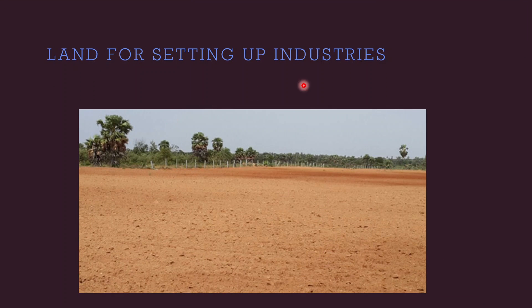Most industries require large areas to set up their industrial units. They preferably establish in areas which are plains — not flood-prone and not very high up on mountains. It is very important to locate an industry on plain ground so that it can help in reaching out to people, and laborers who work in these industries can also access the industrial location very easily. Land is therefore a very important factor for setting up an industry.